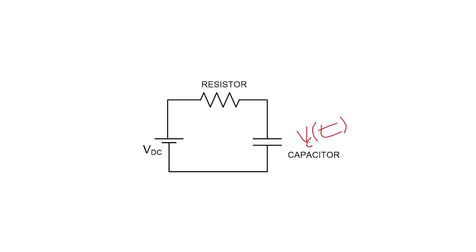He then asked why V_C(t) cannot equal V_DC, and I explained it is due to the time constant and voltage drop across the resistor. He followed up asking: what is the definition of the time constant, what is the time constant in this circuit, and what is the significance of the time constant? He also asked for the initial and final voltage across the capacitor.